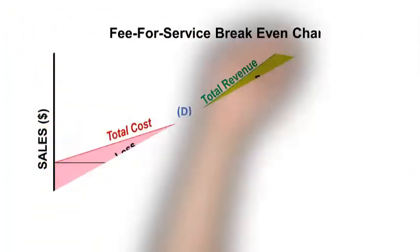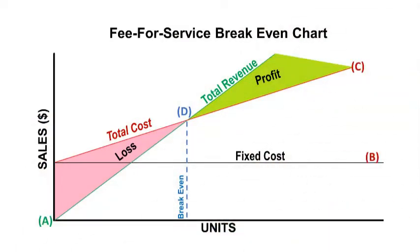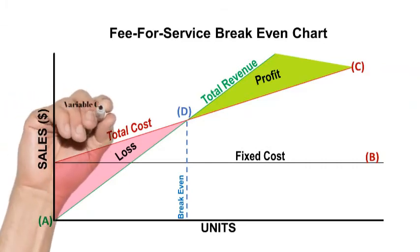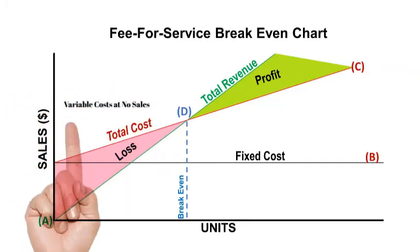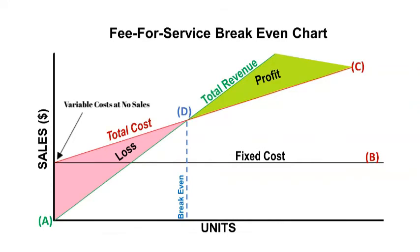Back to healthcare. Graphically, this is what a break-even chart looks like under a fee-for-service reimbursement model. The revenue line starts at the graph apex labeled A — with every unit sold, total revenues increase. Fixed cost is line B. There are no variable costs with no sales. The ramp-up in total costs represented in line C is the total of fixed costs plus variable costs. When total costs equal total revenues at point D, you reach break-even, and every unit sold thereafter is profit.